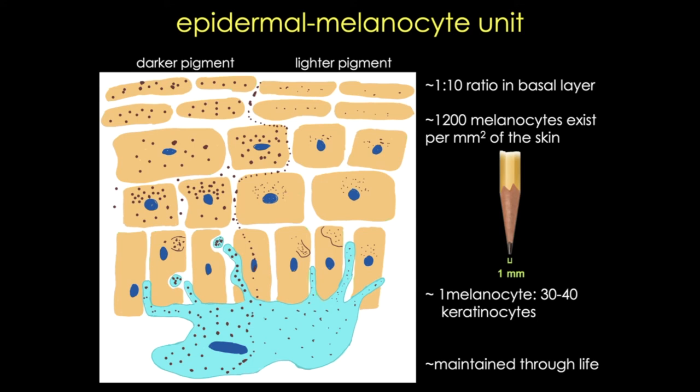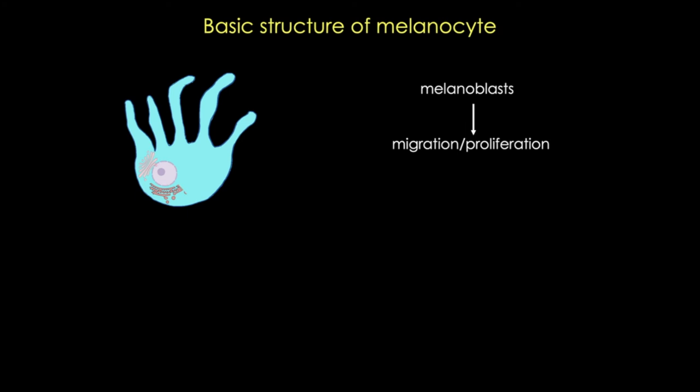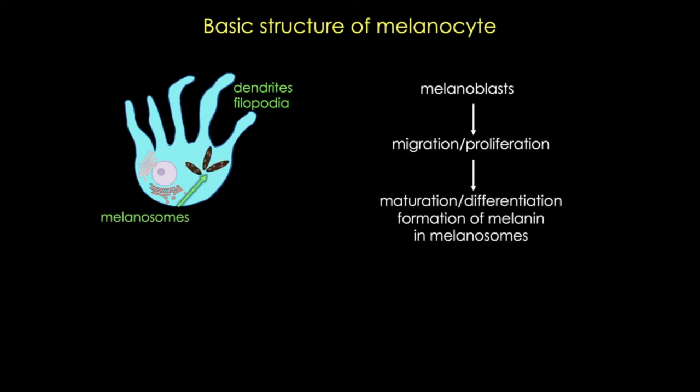Now let's go even deeper and look at the structure inside the melanocyte. Here I've drawn a melanocyte showing a few organelles: the nucleus, the rough endoplasmic reticulum, and the Golgi. You can also see the dendrites or filipodia—finger-like extensions that extend through those epidermal layers of keratinocytes. In the cytoplasm of differentiated melanocytes, we find special membrane-bound organelles—modified lysosomes that produce melanin—called melanosomes.